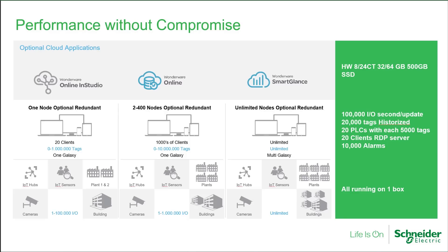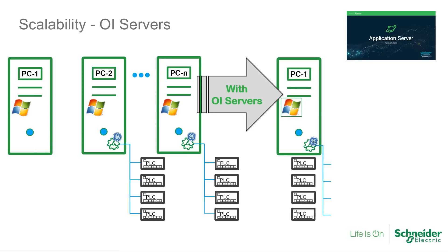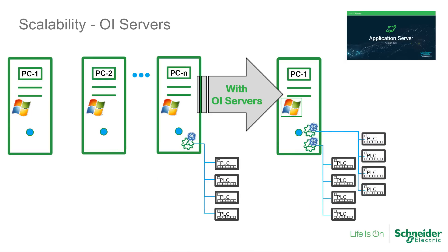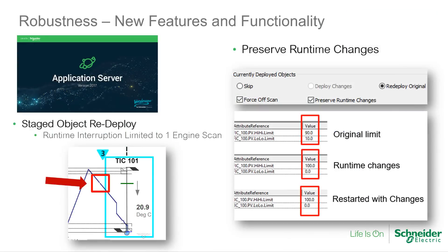Moving on to Wonderware's Application Server, a key feature delivered in 2017 is a significantly reduced runtime footprint, which allows an off-the-shelf PC to support 20 simultaneous RDP sessions running an application with up to 100,000 I/O points. This provides customers with an immediate positive impact on their bottom line by reducing hardware and software licensing costs. Additionally, we've increased the scalability of users' connectivity solutions by enabling multiple instances of the same OI server to be run on a single machine, thereby reducing hardware and licensing costs even further.